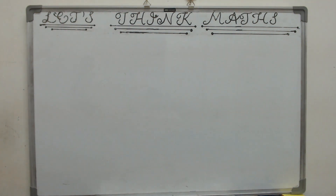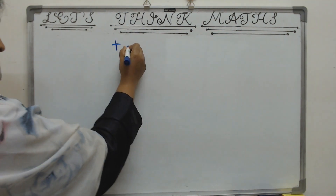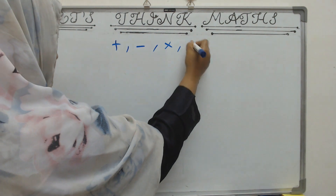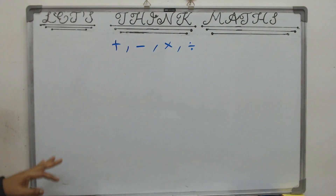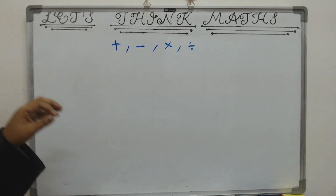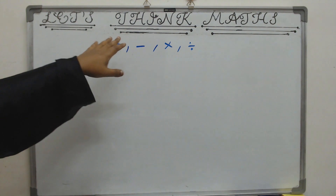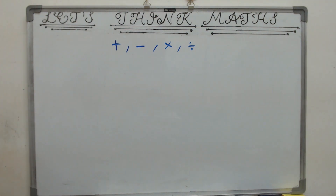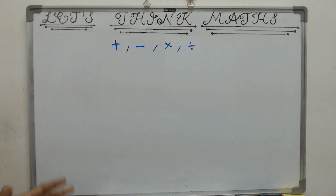By now you must be familiar with the four arithmetic operators: addition, subtraction, multiplication, and division. In this class you will study about some properties that these four arithmetic operators follow. Even more importantly, you will see how these properties make our life better by making our calculations easier.